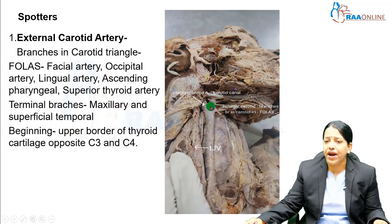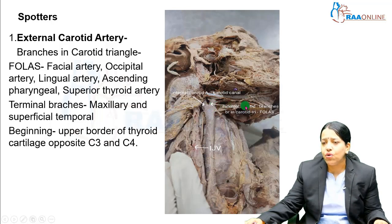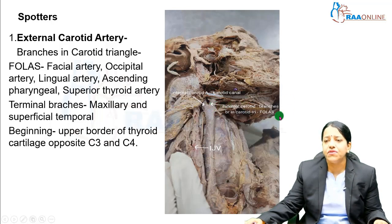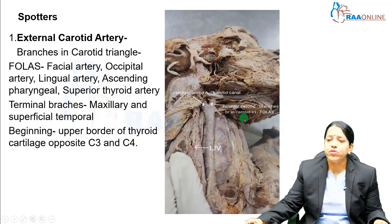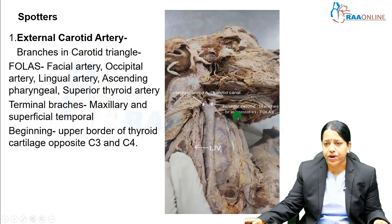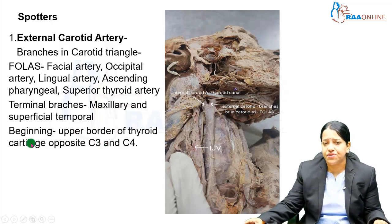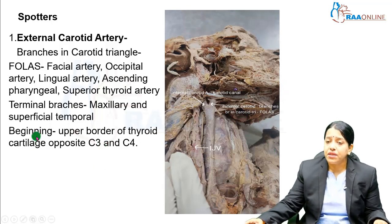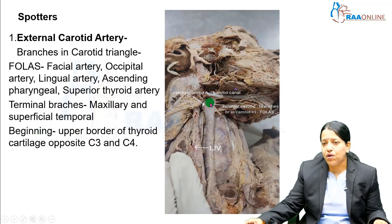The external carotid artery has been identified with this arrow. A tag question will also be given with the spotter. The most commonly asked tag question for the external carotid artery is about its beginning — where it is getting formed.